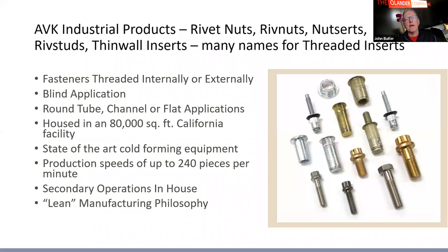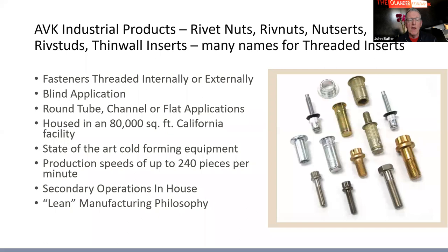AVK Industrial Products — whether you call them rivet nuts, rivnuts, or nutserts — are all essentially blind threaded inserts or studs. A blind fastener means you insert it into a panel, tube, or sheet from one side without needing access to the opposite side. This gives you the option to add high-strength threads to thin sheet metal or round tubing.